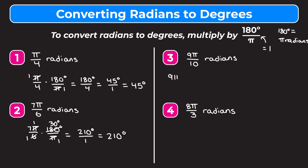Moving on to example three, we have nine pi over ten radians. We're going to rewrite nine pi over ten and multiply by 180 degrees over pi. We cross out the pi's and cross-reduce ten and 180 by dividing both by ten: ten divided by ten is one, 180 divided by ten is 18. Now we multiply straight across: nine times 18 gives us 162 on top, one times one gives us one on the bottom. So we get that nine pi over ten radians is equal to 162 degrees.